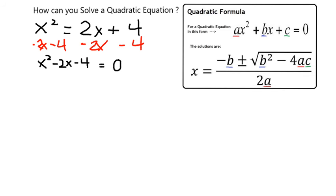So on the left, I get x squared minus 2x minus 4, and on the right-hand side, everything cancels and leaves me with 0.